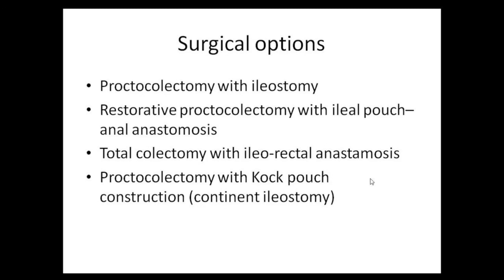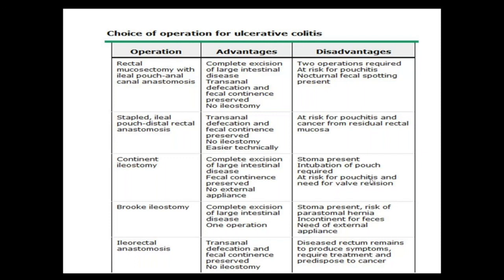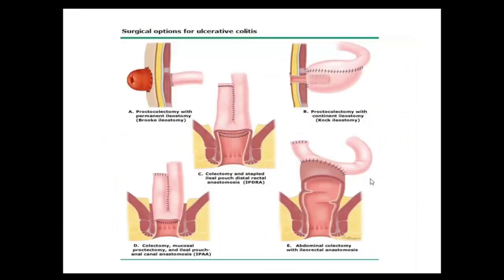Rectal mucosectomy is sometimes considered when mild dysplasia is found in the rectum — the rectal mucosa is removed per-anally and anastomosis is performed, but complication rates are higher with intramural abscess formation, cuffitis, and pelvic sepsis. Generally, the four standard lower options are: stapled pouch anastomosis, continent ileostomy (now historical), Brooks ileostomy, and ileorectal anastomosis.